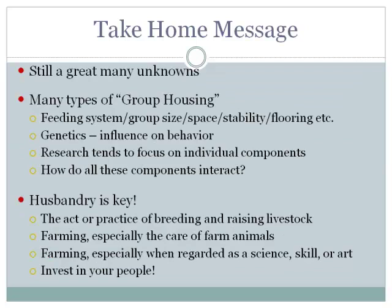Unfortunately there are still a great many unknowns. We still don't even know enough about the basic ethology occurring when sows interact with each other. The label 'group housing' means many different things: feeding system, group size, space, stability, flooring — all these things impact what we have. Genetics is something we haven't yet investigated, yet pig farmers have strong opinions about different lines or breeds that do well in group systems versus those that don't.